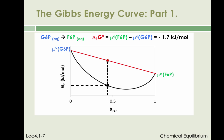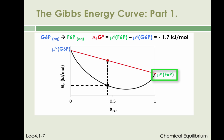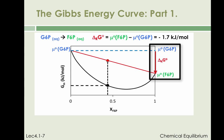If the reactive mixture was the pure reactant, corresponding to X_F6P equals zero, the reactive mixture would have a molar Gibbs energy equal to mu standard G6P. If, on the other hand, the reactive mixture was the pure product, corresponding to X_F6P equal to 1, the reactive mixture would have a molar Gibbs energy equal to mu standard F6P. If the reaction went to completion, the standard reaction Gibbs energy change would be mu standard F6P minus mu standard G6P, shown by the long vertical red arrow at X_F6P equal to 1.